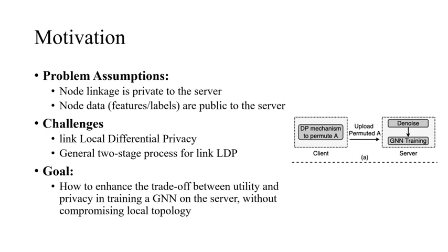The assumption is that node linkage is private and the node data public. We realize the protection of sensitive linkage based on link local differential privacy, which involves perturbing the topology so as to prevent attackers from inferring whether a specific edge exists in the training data.